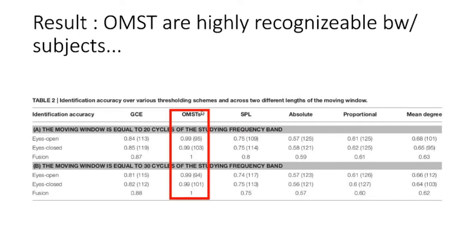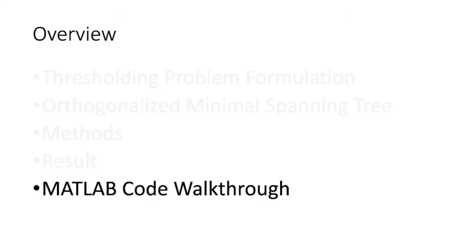The key result is 99% accuracy for OMST and sometimes 100% when fusing eyes open and eyes closed — much higher than GCE, SPL, absolute, proportional, and mean degree. However, getting 99-100% accuracy is a red flag; it might mean we're modeling noise. Something is making these graphs highly recognizable between subjects with this technique, but I'm not sure exactly what.